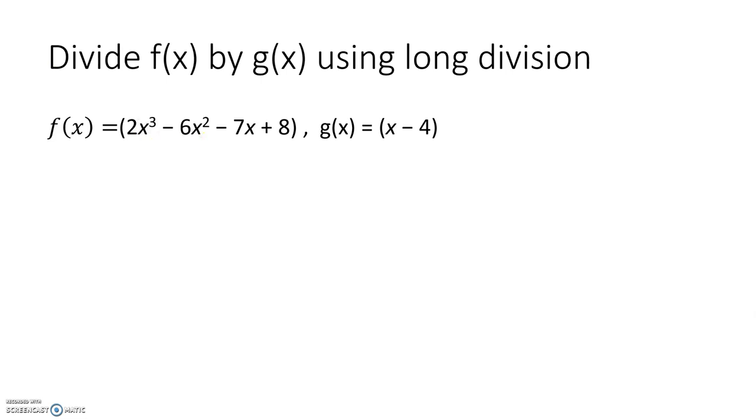So on our first one, we're going to set it up – X minus 4 and 2X cubed – and I have to make sure that I have a term for each value less than the leading term. So our leading term is X cubed. It's a cubic term. So I have to have something to the second power or a quadratic term, and I have to have a linear term or something to the first power and a constant. I do for this one, so I don't need any placeholders, so I simply divide.